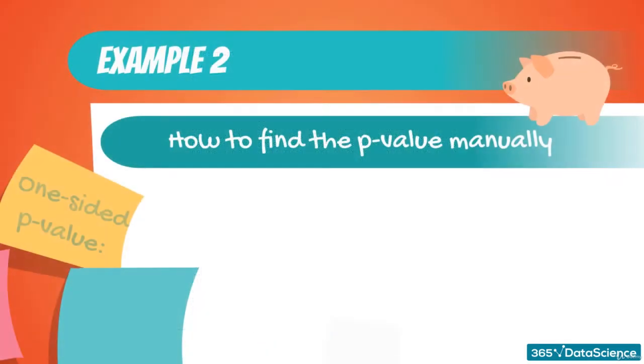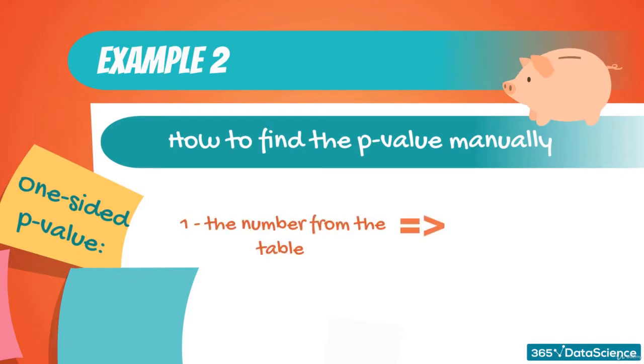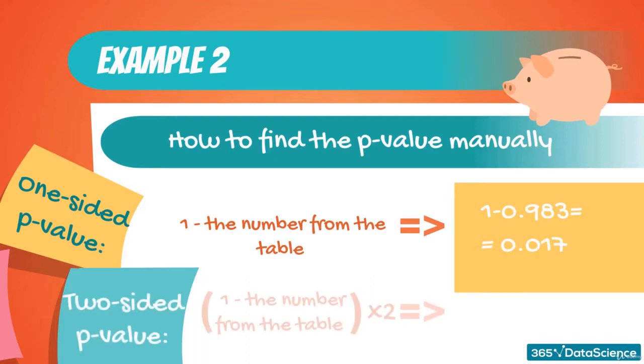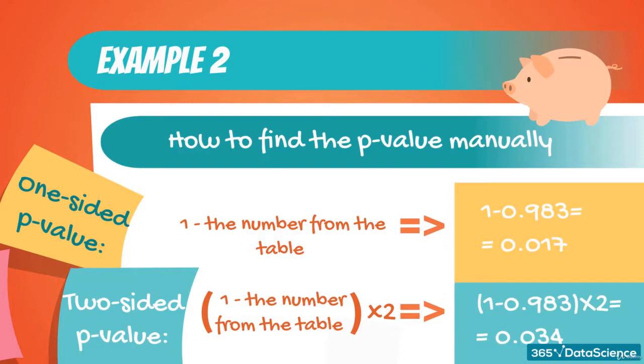The p-value for a one-sided test is 1 minus the number we see in the table. So, the corresponding p-value is equal to 0.017. The p-value for a two-sided test is equal to the number we see in the table multiplied by 2. Therefore, the p-value would be 0.034. This is also the answer to our question.